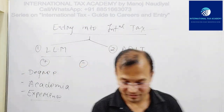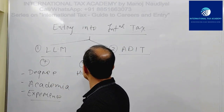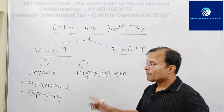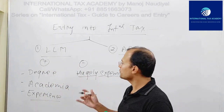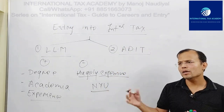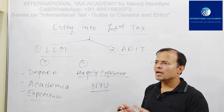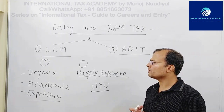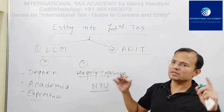Now the cons. The biggest disadvantage is that an LLM is usually expensive. To put some numbers to it: looking at the fee structures of two of the most reputed LLM international tax programs in the world — one offered by NYU (New York University). In the US, universities offering LLM international tax programs include NYU, University of Florida, Georgetown, University of Virginia, and University of Michigan, among others.